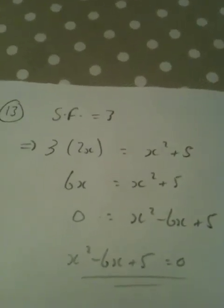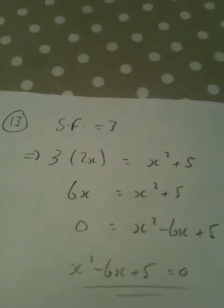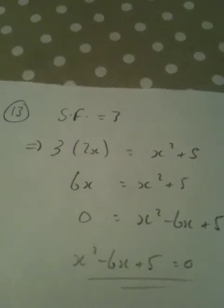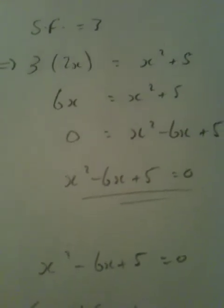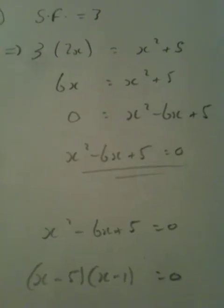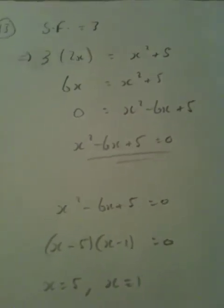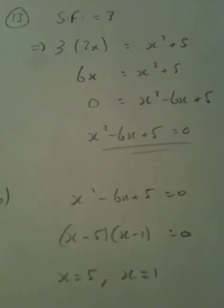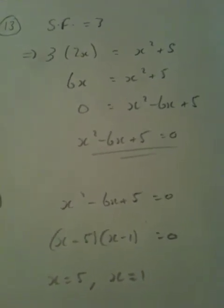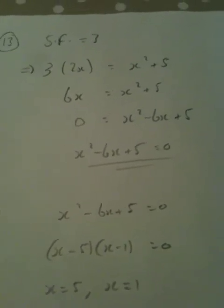Part b. Given that QR is the shortest side of triangle PQR, find the value of x. So basically we have this from part a: x squared minus 6x plus 5 equals 0. If I solve that, I will get two values for x. Factorize first then solve, so either x minus 5 is 0 or x minus 1 is 0. If x minus 5 is 0, x will equal 5. If x minus 1 is 0, x will equal 1.